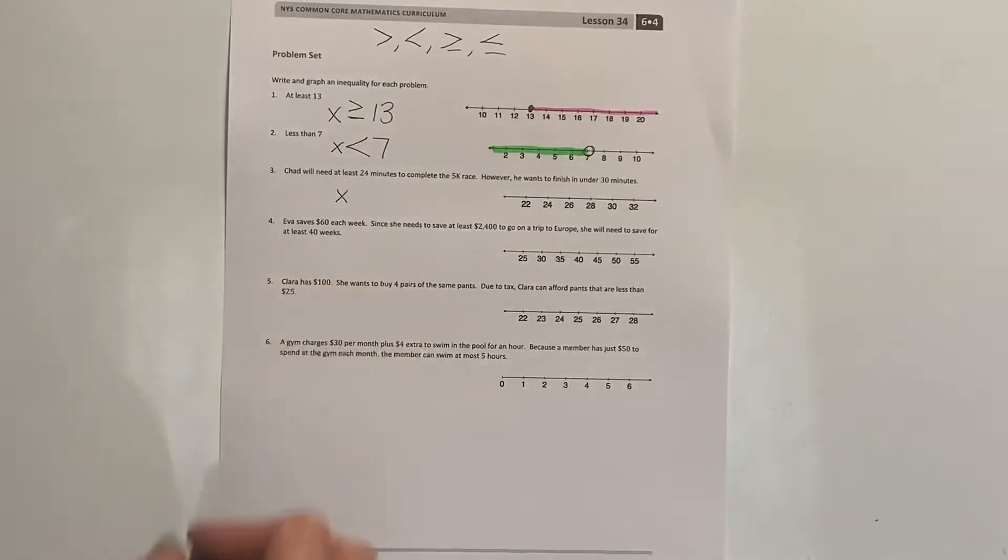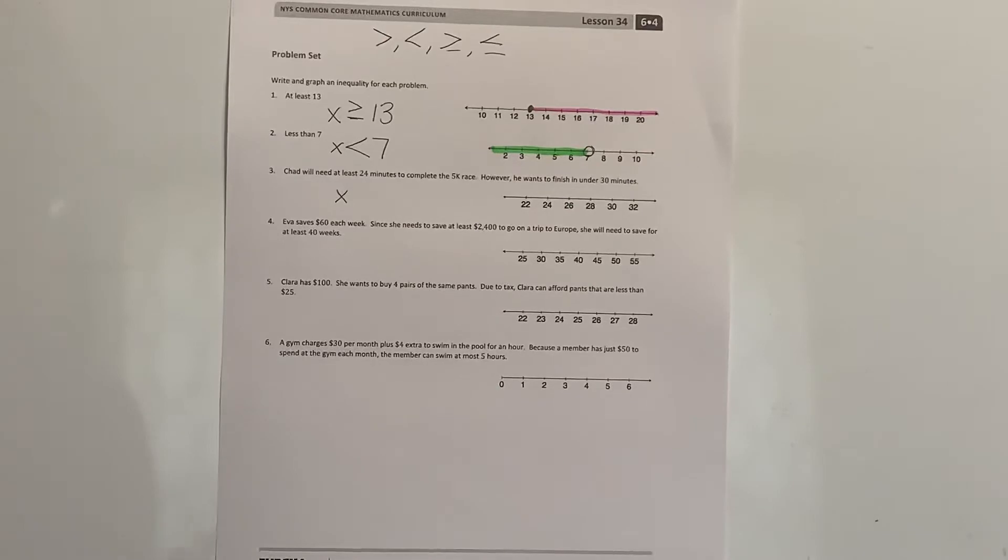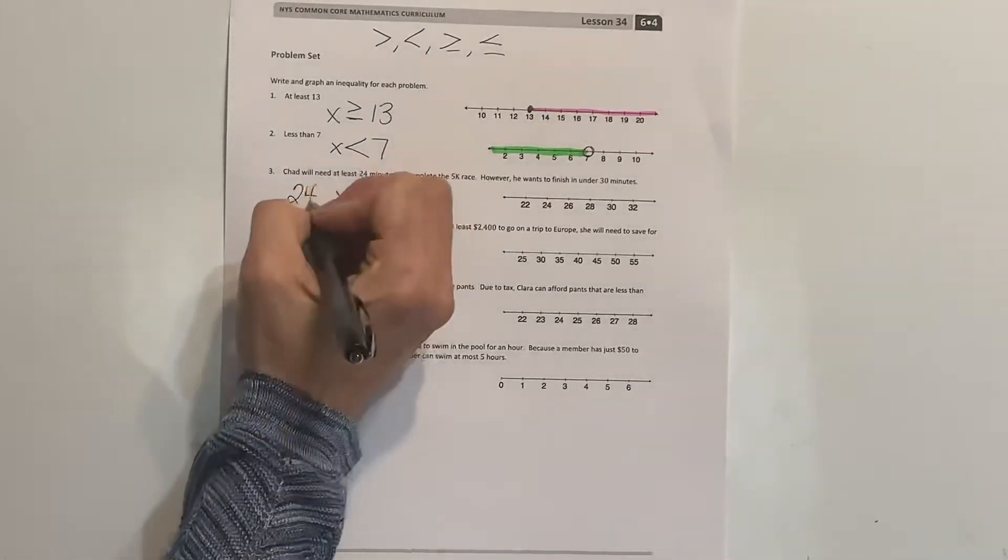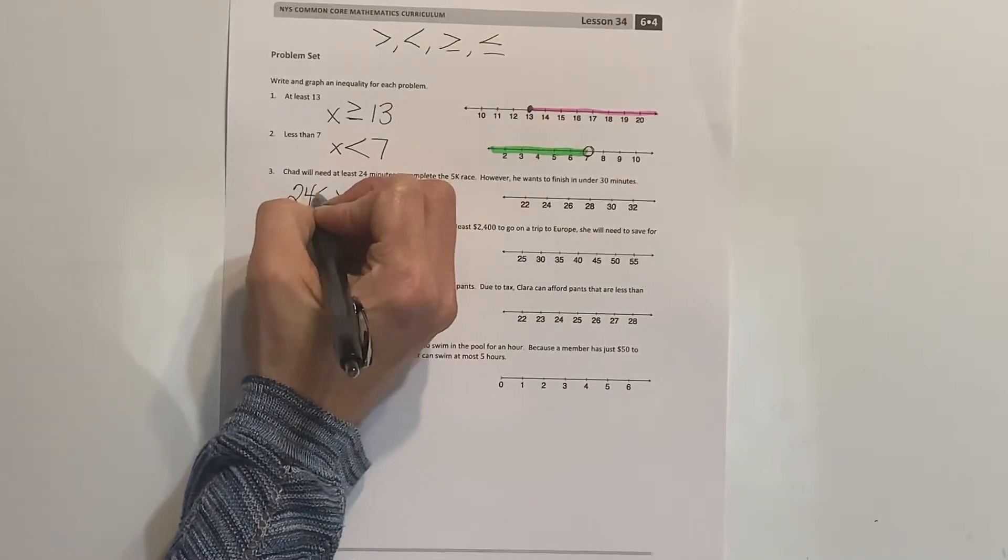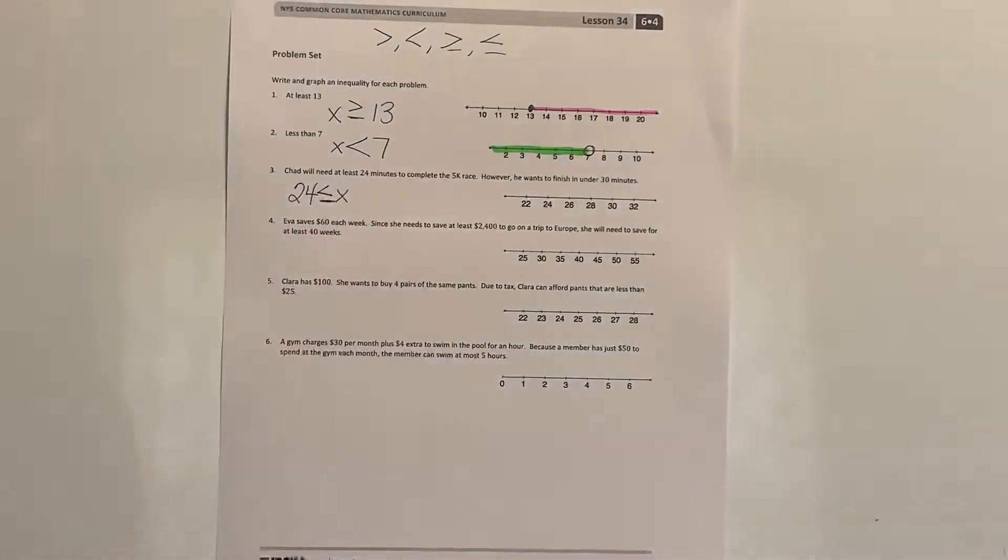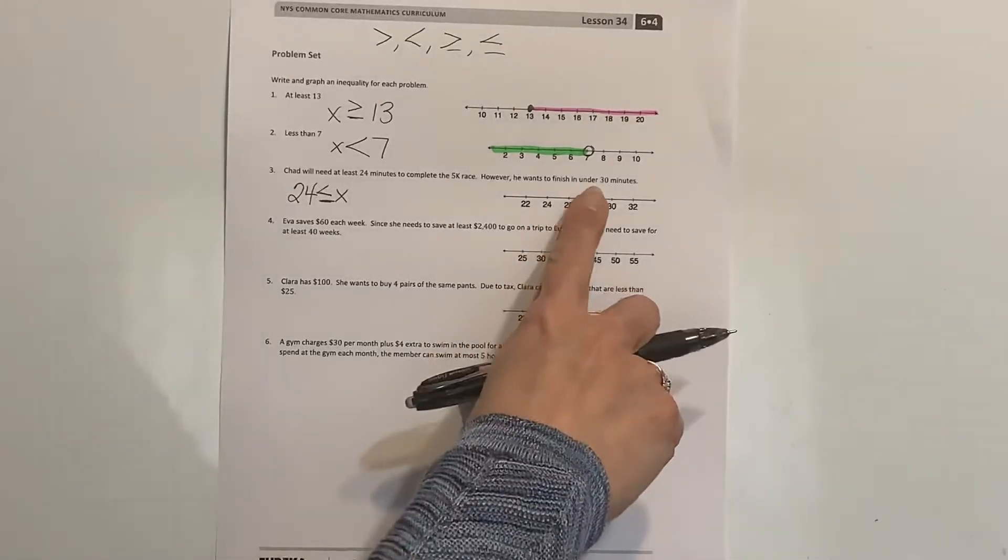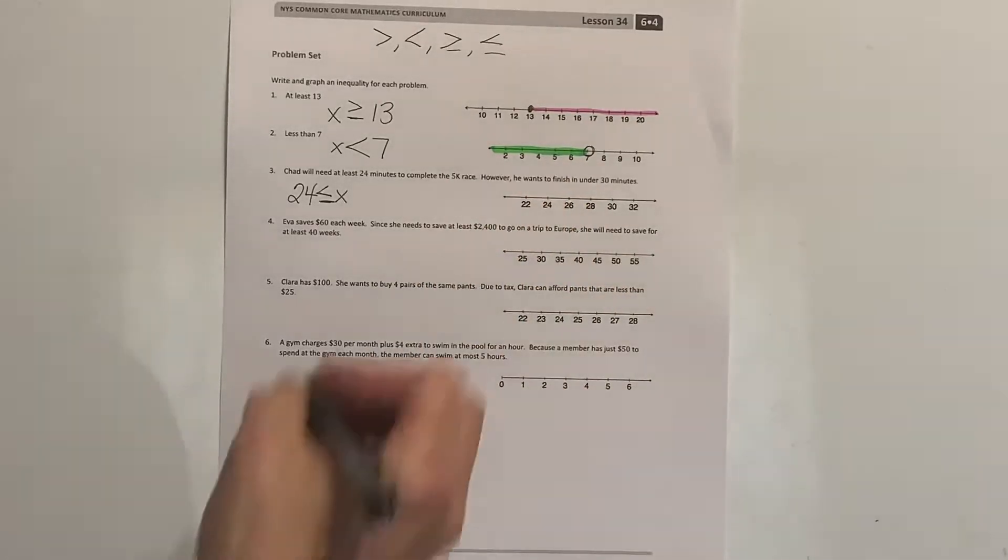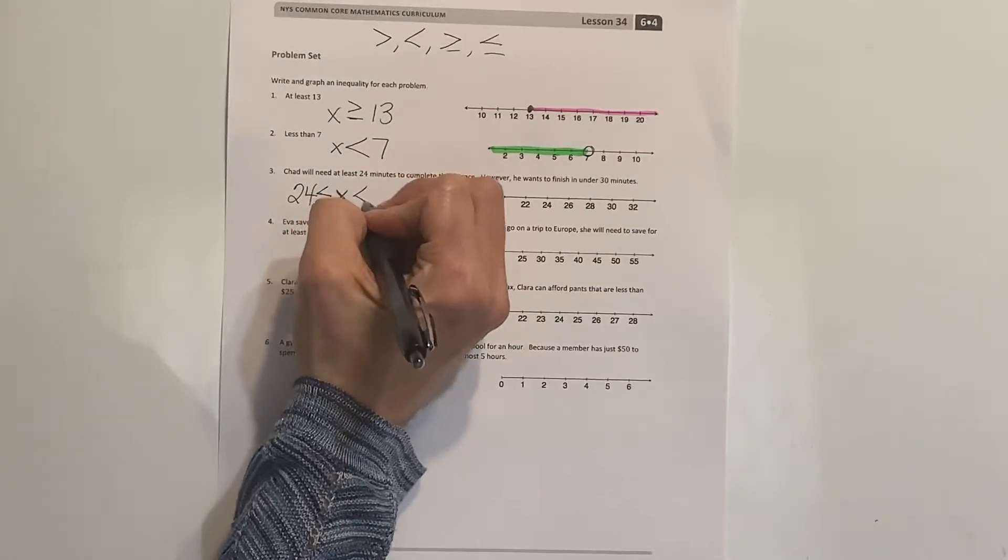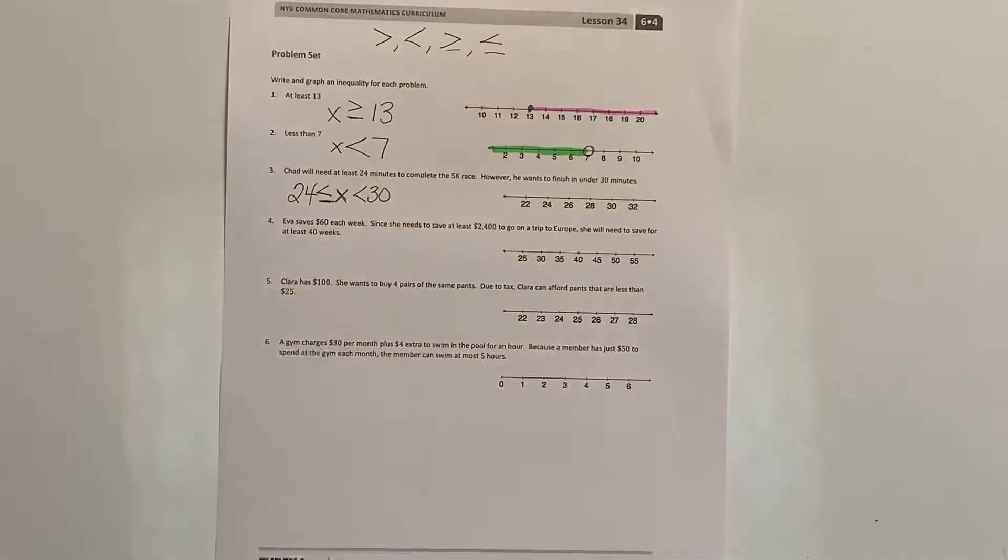I'm going to use x as my unknown, and I know that Chad wants to run this race, at least he's going to take 24 minutes. So we've got 24 minutes, and since it says at least, it's 24 is less than or equal to what he is going to run or what he expects to run. But he has to be completed in 30 minutes, so what he wants to do is complete it in less than 30 minutes.